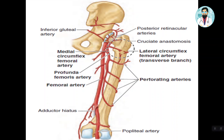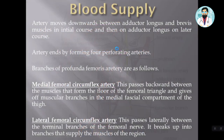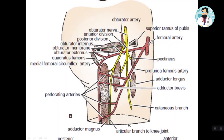All these branches anastomose with each other, so that — God forbid — if one vessel is blocked, the other vessel will compensate. The obturator artery also gives blood supply to a little portion of the medial compartment.